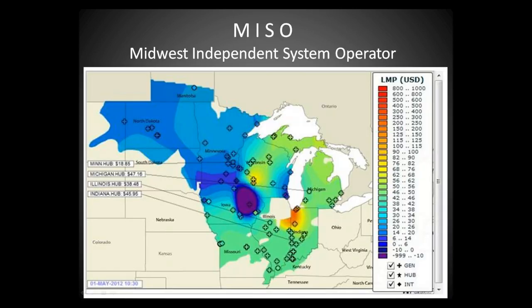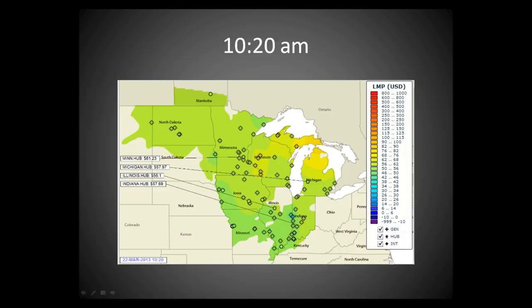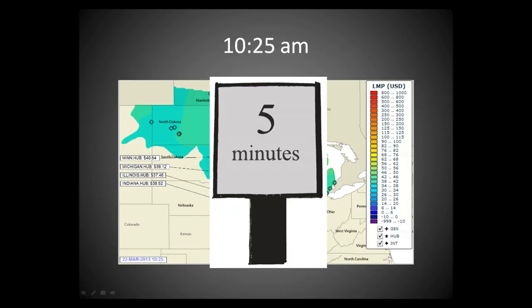This map shows the area covered by Midwest Independent System Operator, or MISO. The wide range of colors indicates that in this snapshot in time, LMPs varied significantly. On a different day, you can see how locational marginal prices changed from 10:20 to 10:25 AM.